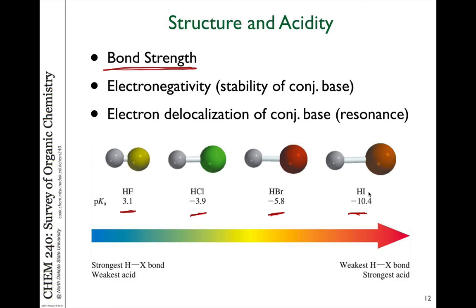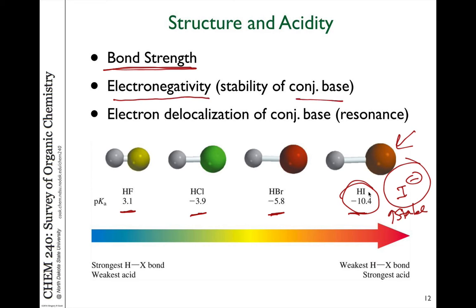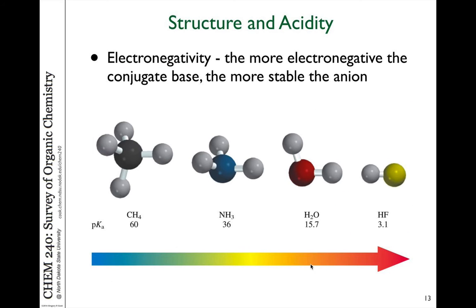As you go to larger halogens, the HX bond is weaker, so the acid can give up the proton more easily. The conjugate base, for example I⁻, is a much larger, more spread-out species because the atom is larger — the electrons are more delocalized, always leading to greater stability. This relates to both electronegativity and the delocalization of electrons, either by size or through resonance. The more electronegative the atom, the greater its ability to accept electrons and be stable as a negatively charged species.